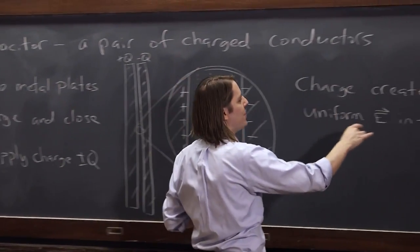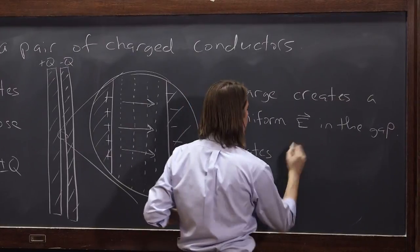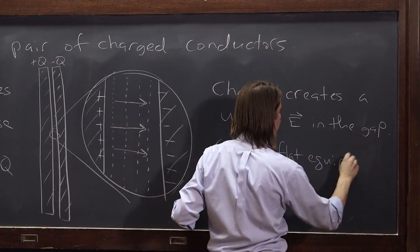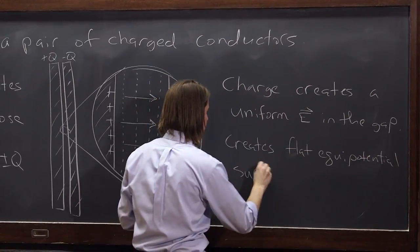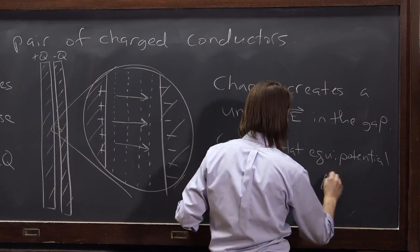So the charge creates uniform E through the gap, and it creates flat equipotential surfaces and a voltage drop, delta V.